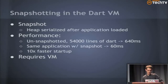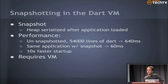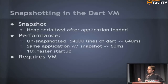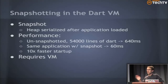The snapshot stat is really cool. If you have a 54,000-line Dart program — which isn't even that big — sending the unsnapshotted version over the wire gives you something like 640-millisecond startup. With a snapshot, it's 10x faster startup. Anything we can do to make the web faster — whether working on protocols, snapshotting, or the rendering engine — is an important element.